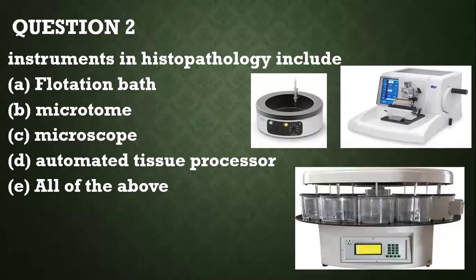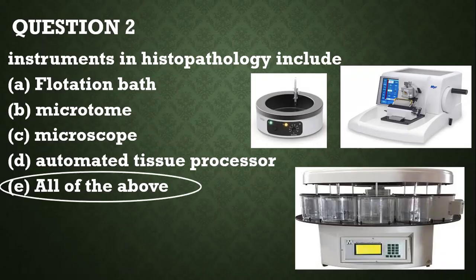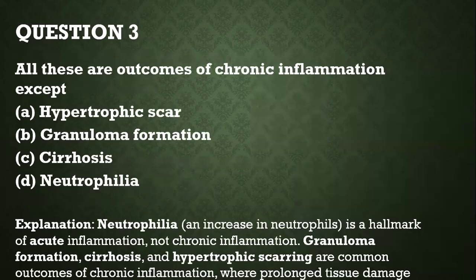Question number two: instruments in histopathology include the flotation bath, the microtome — this is a rotary microtome — the microscope, and the automated tissue processor. All of the above are instruments that we see in the histopathology lab.